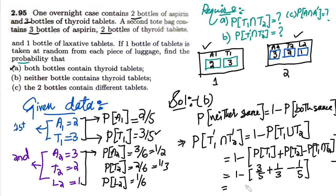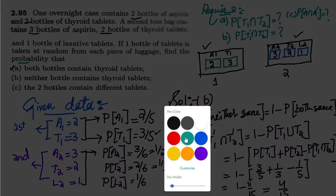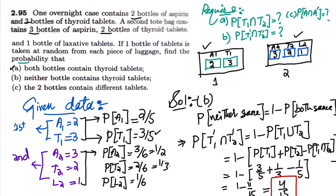And probability of T1 and T2 we have found out in our previous part of this question and it was 1 by 5. When it is calculated and then subtracted from 1, 11 by 15 which ultimately give me 4 by 15 and that is the solution of part B.